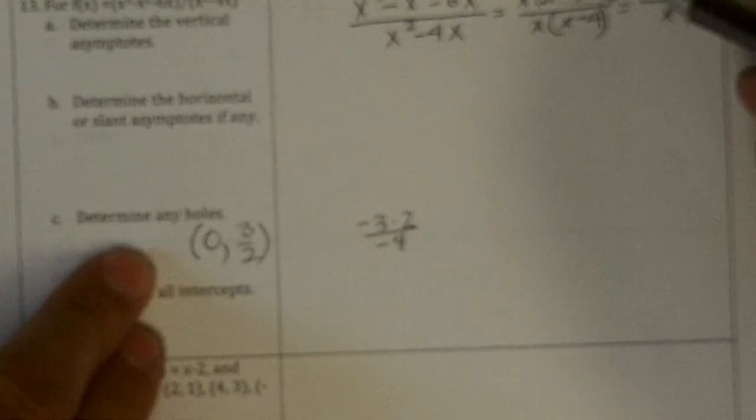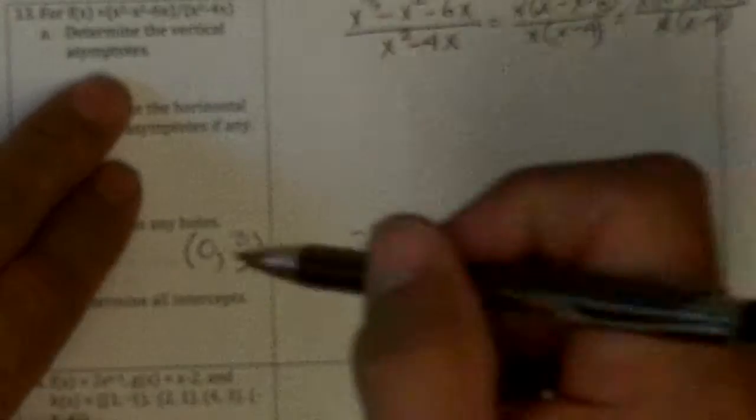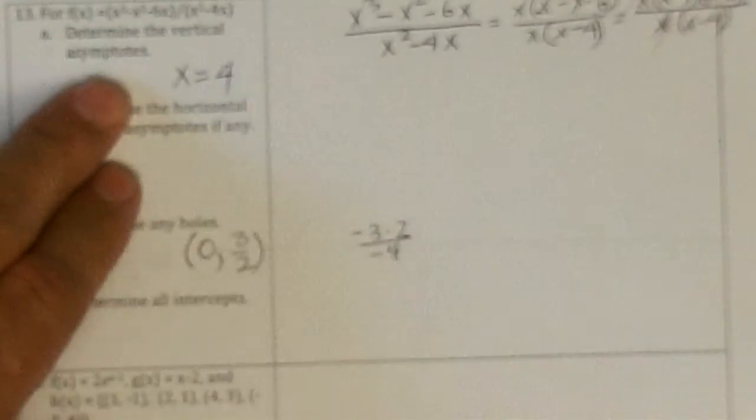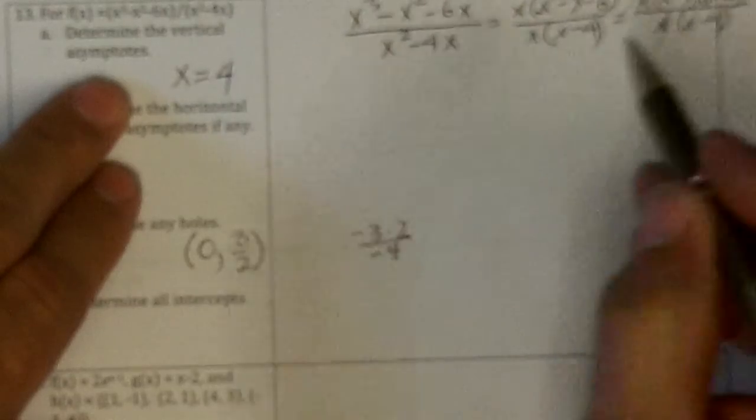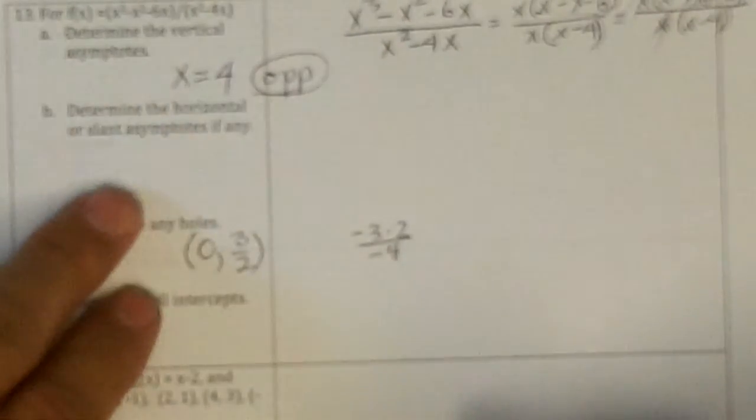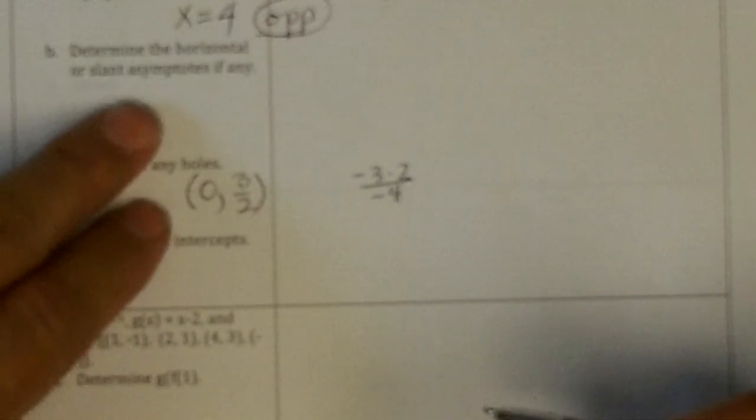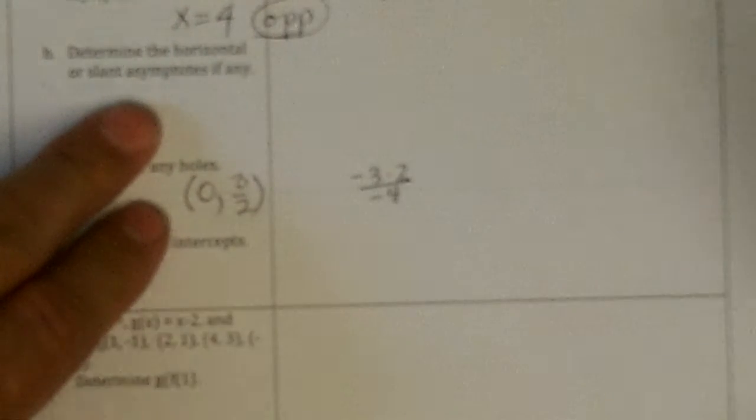So now I can forget the x's for a while, and I can find the vertical asymptote. That would be at x equals 4. Just for information, the behavior has to go opposite because that's a single factor. Then determine the horizontal or slant asymptotes.